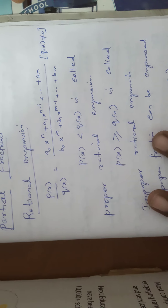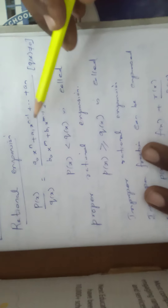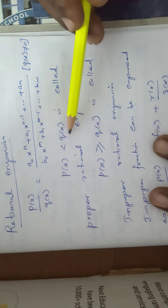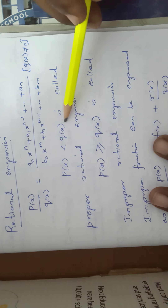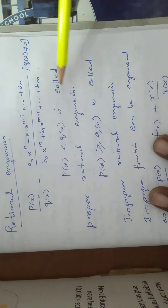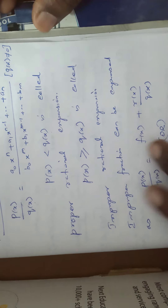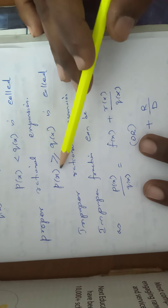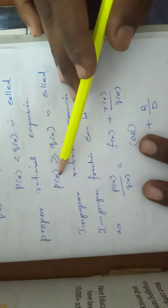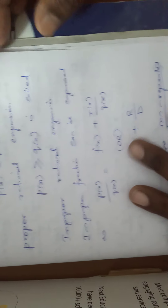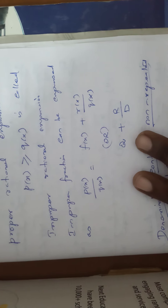Q(x) is not equal to 0 — the denominator value is not equal to 0. If the degree of P(x) is less than Q(x), this is called a proper rational expression. If the degree of P(x) is greater than or equal to Q(x), it is called an improper rational expansion.